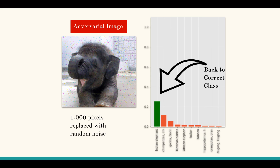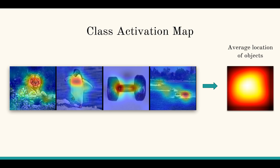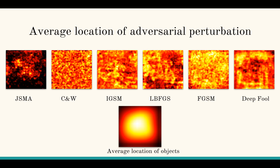All we did was introduce some noise to the image. The key insight we found is that the classifiers are looking for semantic reasons while the adversarial systems are agnostic to the presence of these objects. We can verify this by looking at class activation maps — averaging over several images, most objects are around the center of the canvas, but all adversarial attacks except one specific kind are agnostic to the position of the main object.